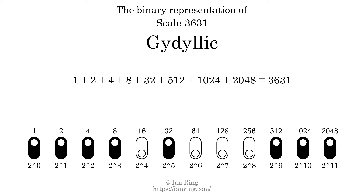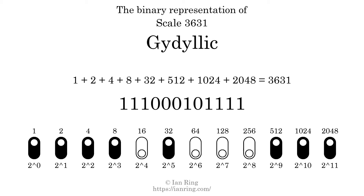That is why the scale number, in decimal, is 3631. The scale number not only enumerates the scale with a unique index, but it also literally describes the tonal content of the scale. Represented as a binary number in base 2, the scale number is 111000101111.